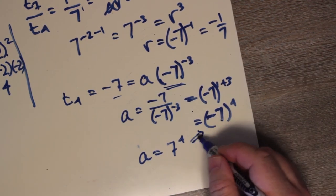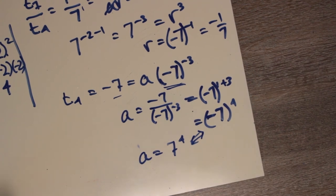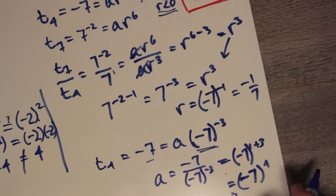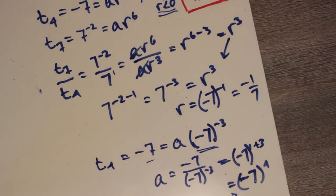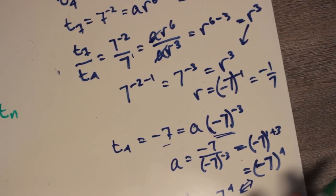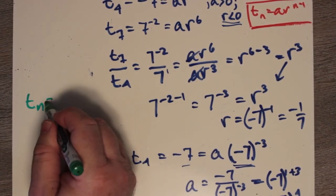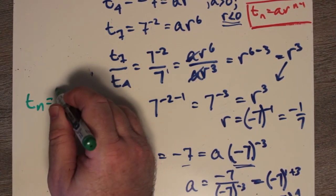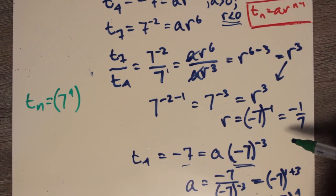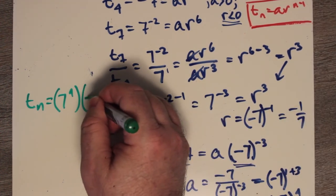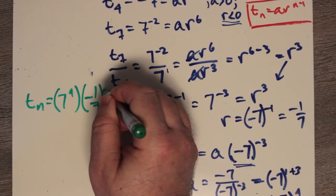So A equals 7 to the 4. Our nth term is then 7 to the 4 times (negative 1 over 7) to the n minus 1. This can be simplified. We can rewrite (negative 1/7) to the (n minus 1) as (negative 7) to the negative (n minus 1), which is (negative 7) to the (1 minus n).